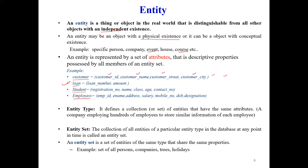An entity set is a collection of entities of a particular entity type in the database at any point of time. For example, there are hundreds of employees working in a particular organization. Each employee has employee ID, name, address, and salary — common attributes used to identify each employee. This collection is called the employee entity set. Other examples include a set of all persons, companies, trees, or holidays.